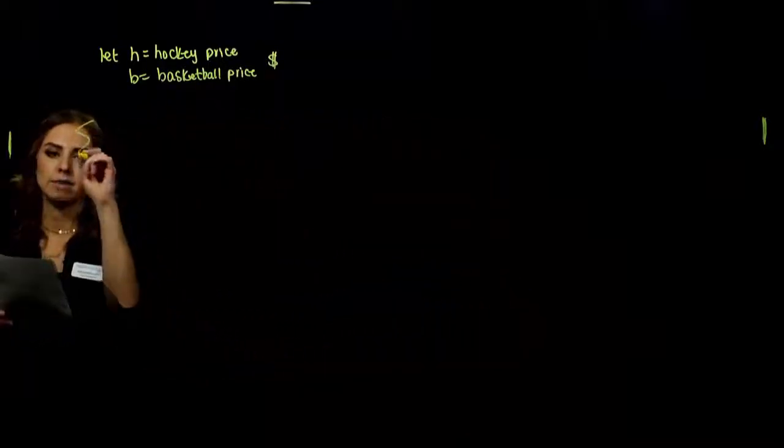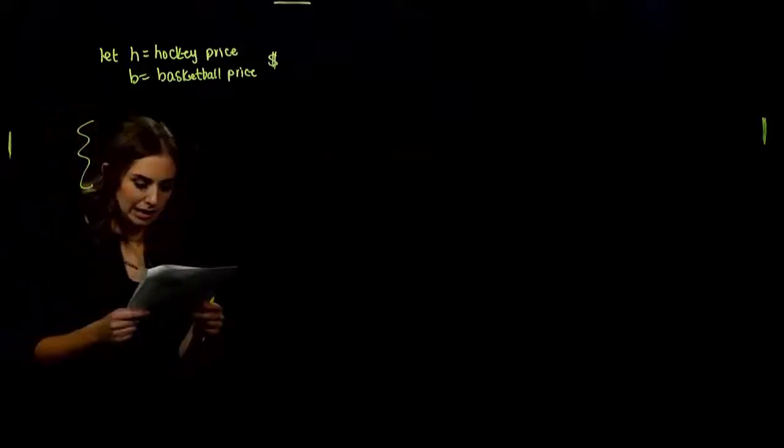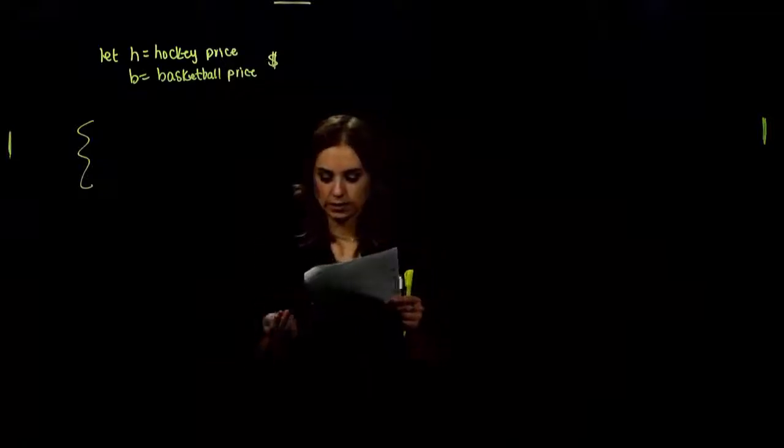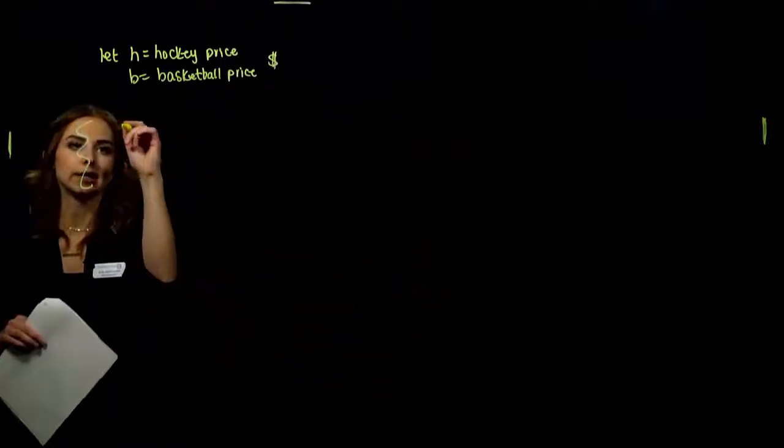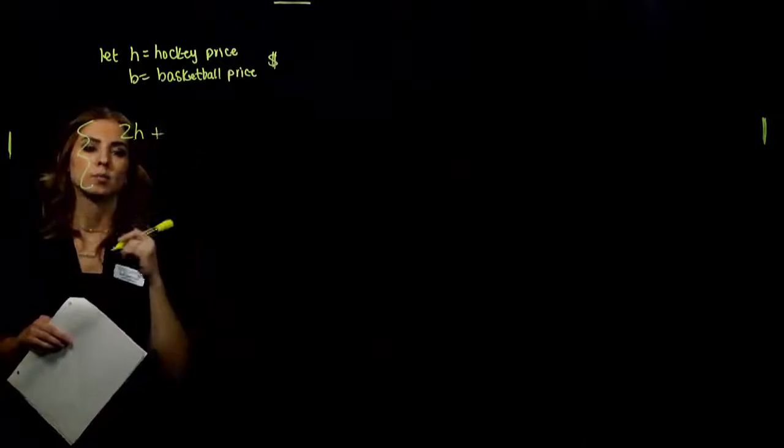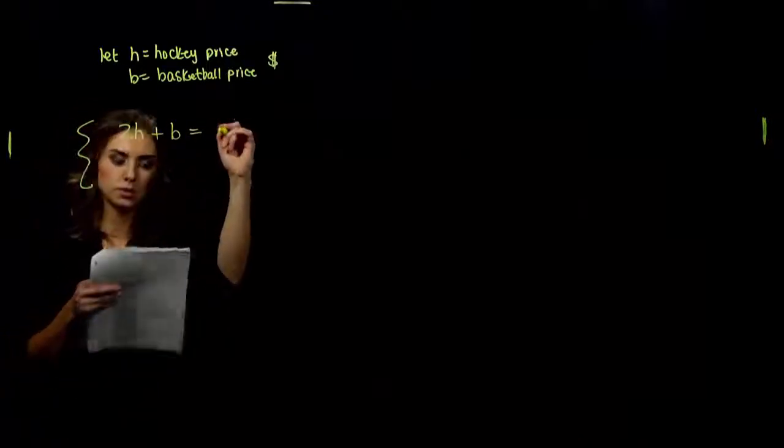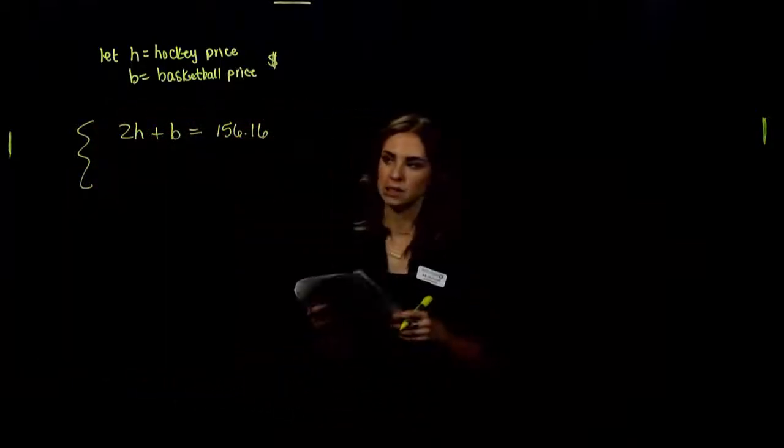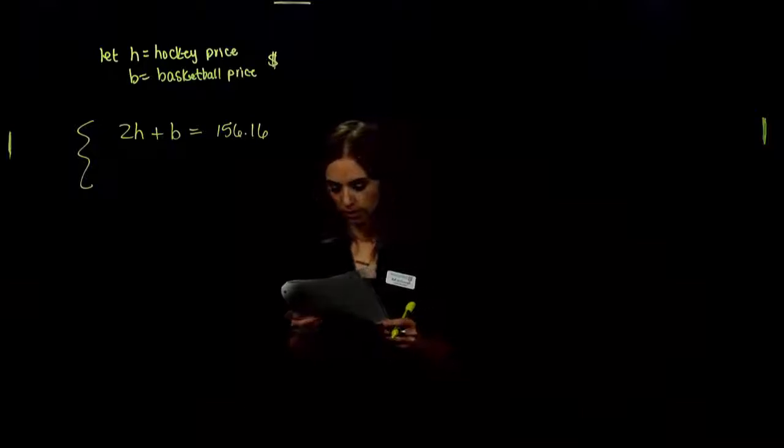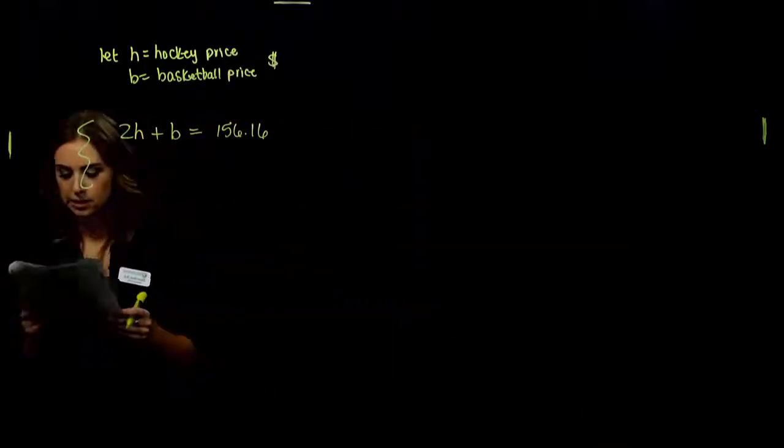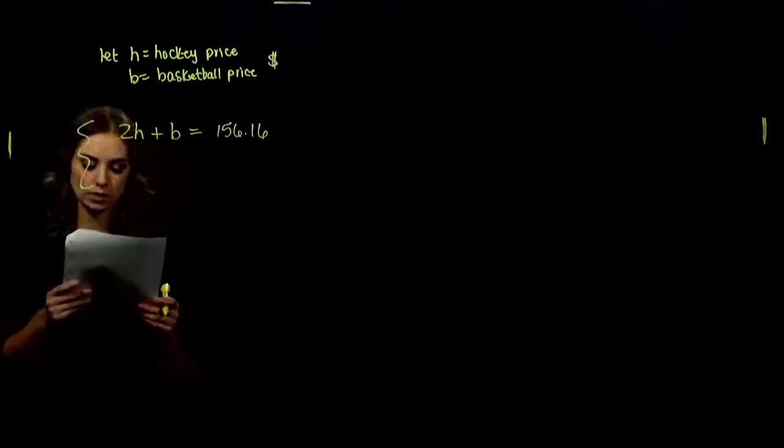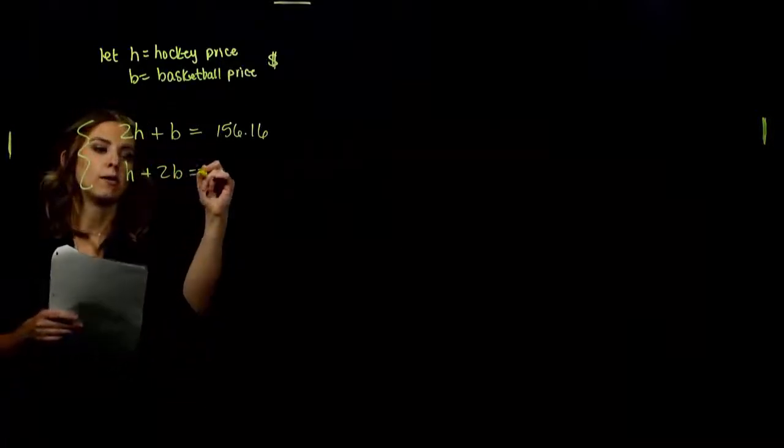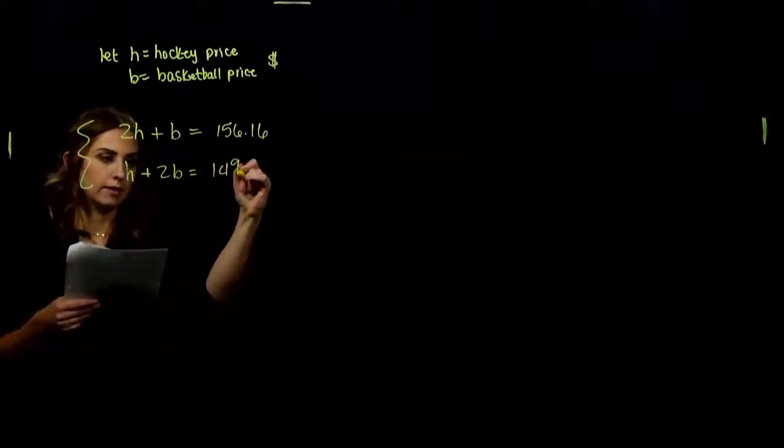So building two equations from this information that's given. The first piece, what do they give us? Two hockey tickets and one basketball tickets would have cost $156.16. So two of our hockey tickets, 2 times H, plus another basketball ticket gave us $156.16. We have one equation, but we need two to work with. So the next piece, one hockey ticket and two basketball tickets would have cost $149.57. One hockey, two basketball, $149.57.